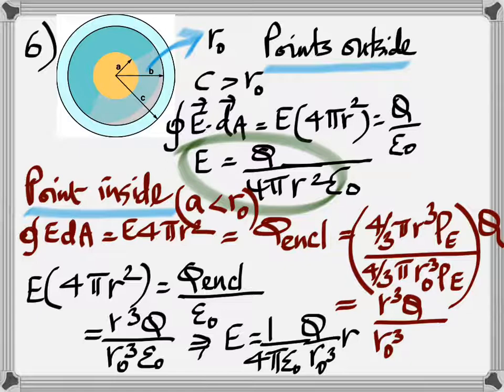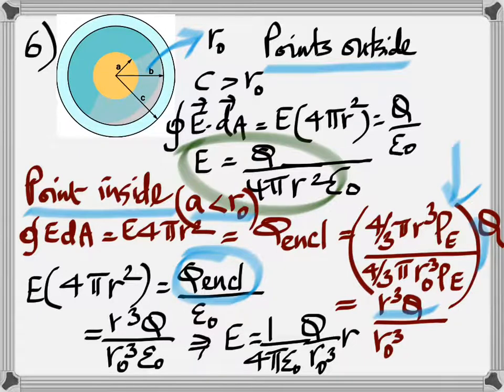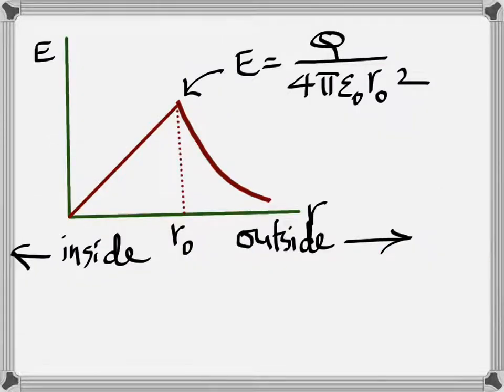For points inside, when you come to A less than R naught, again you use Gauss's law. But this time, you have to find the ratio of the charge. So you only need the charge inside the Gaussian surface. That's what this term signifies. And so that is what we've tried to find here as a ratio where rho E is the density of charge, actually. Density of charge. Volume density of charge, in fact. So you get this final result.